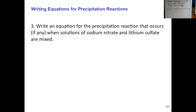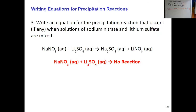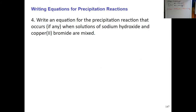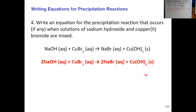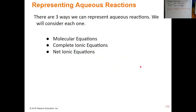For sodium hydroxide and copper-2 bromide: we end up with sodium bromide, which is aqueous, and copper hydroxide, which is insoluble, so it gets a solid symbol next to it. Our balanced precipitation reaction is 2NaOH + CuBr2 yields 2NaBr(aq) + Cu(OH)2(s). So those are precipitation reactions.